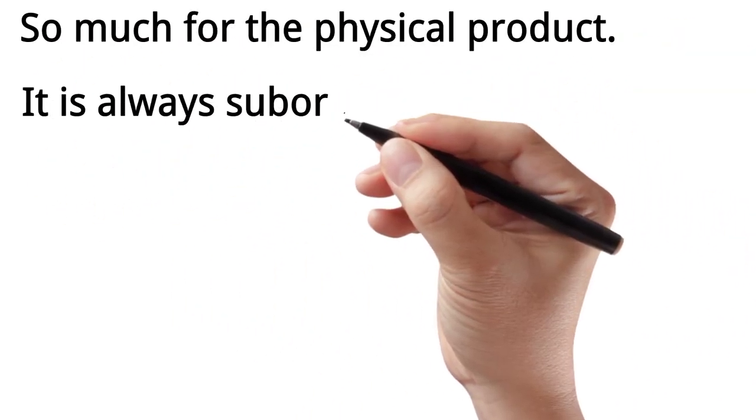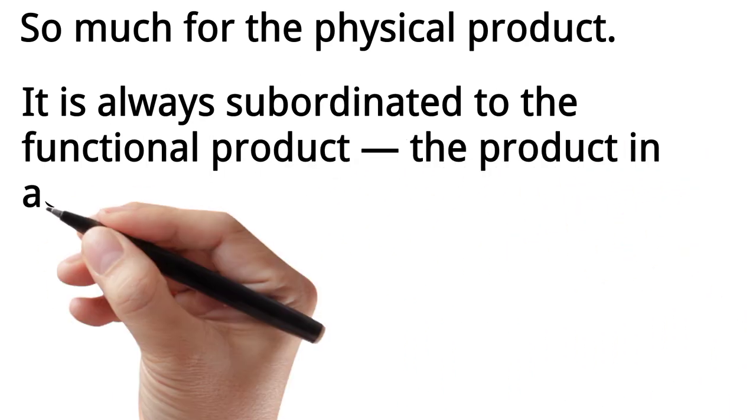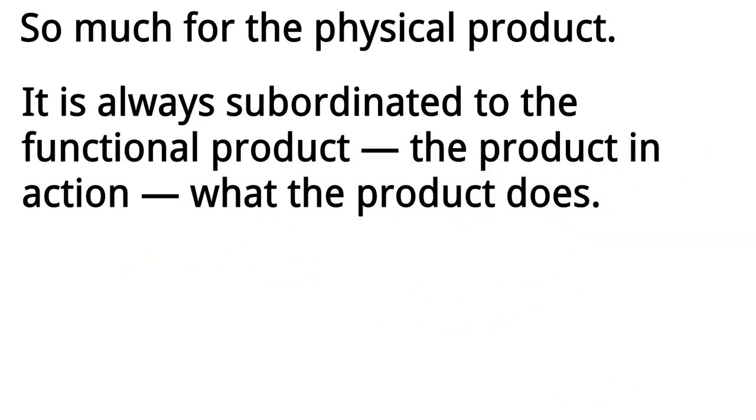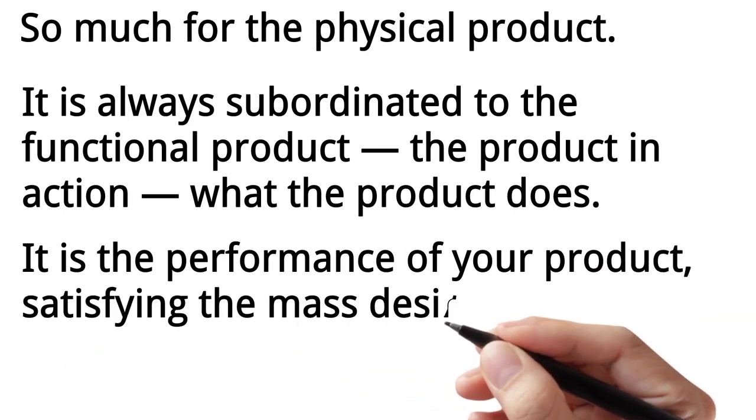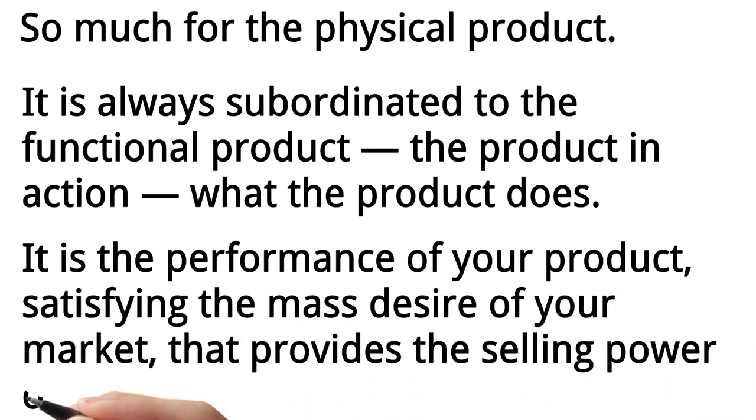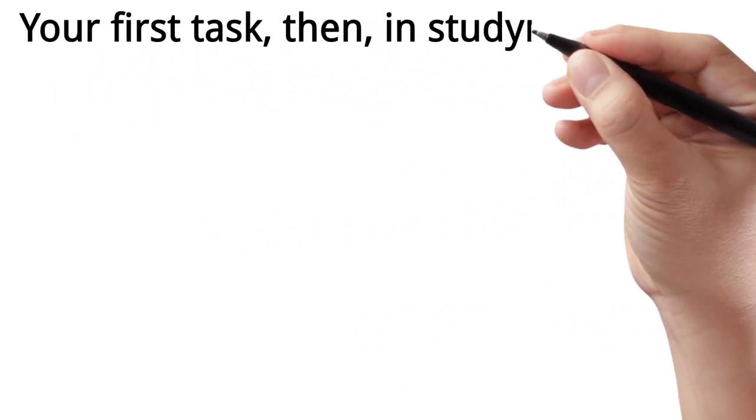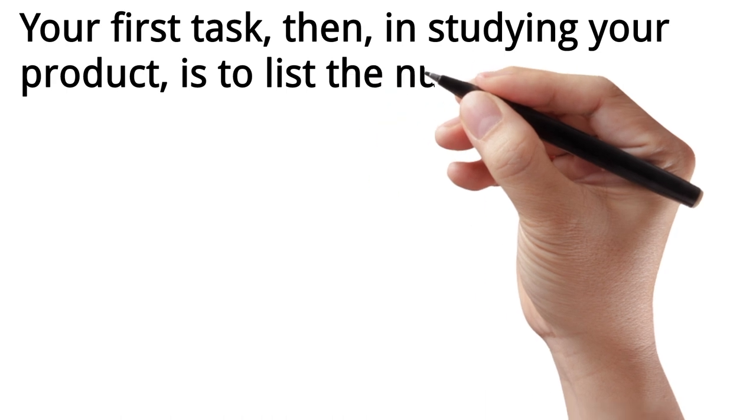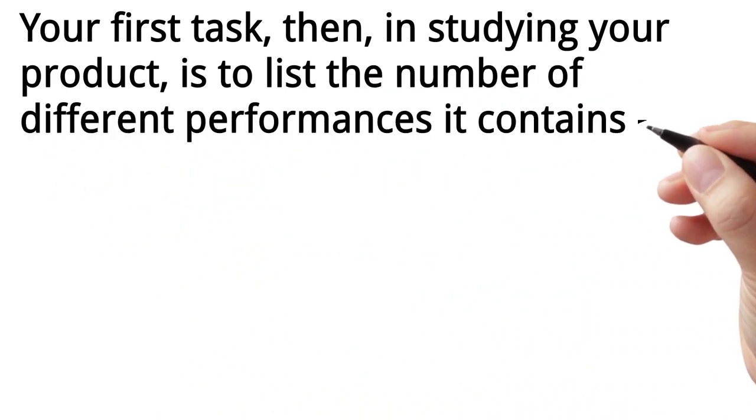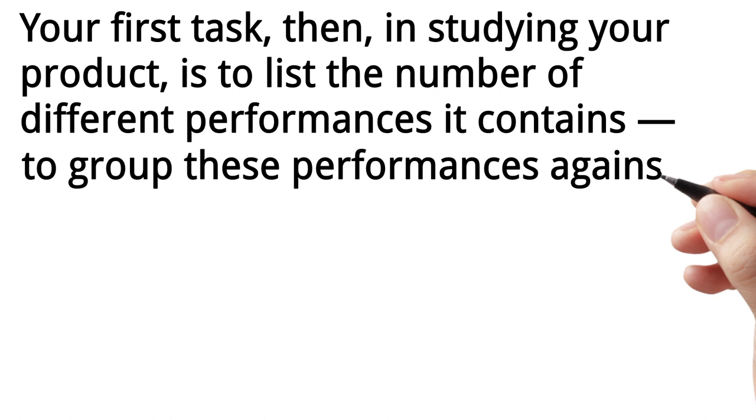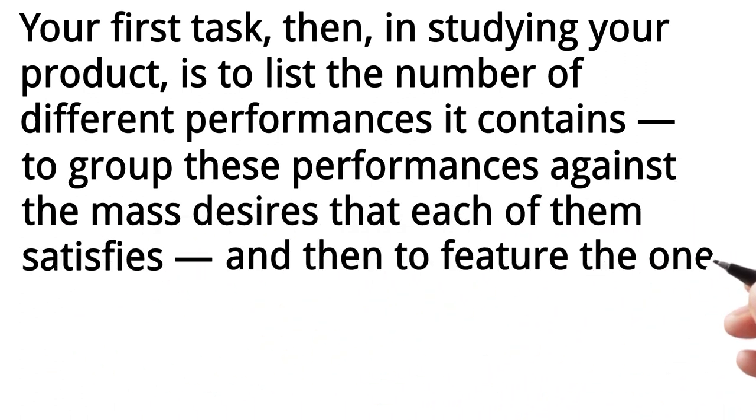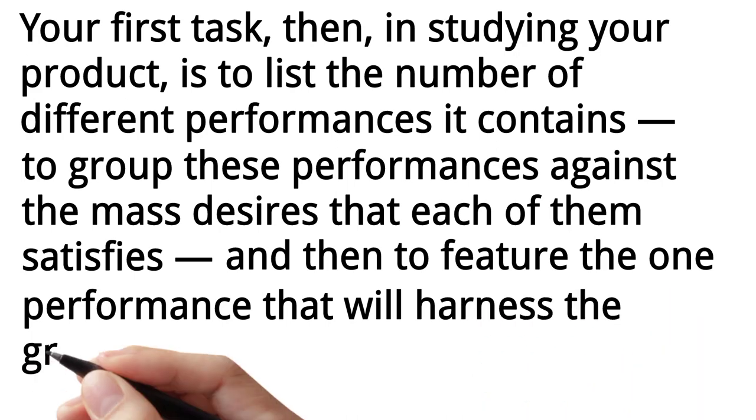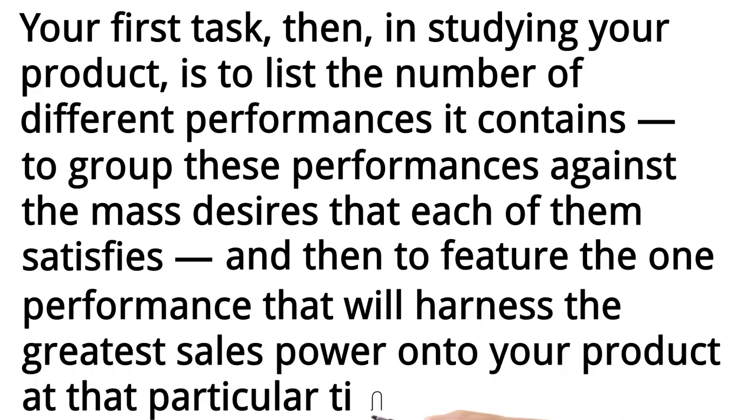It is always subordinated to the functional product, the product in action, what the product does. It is the performance of your product, satisfying the mass desire of your market, that provides the selling power of your ad. Your first task, then, in studying your product, is to list the number of different performances it contains, to group these performances against the mass desires that each of them satisfies, and then to feature the one performance that will harness the greatest sales power onto your product at that particular time.